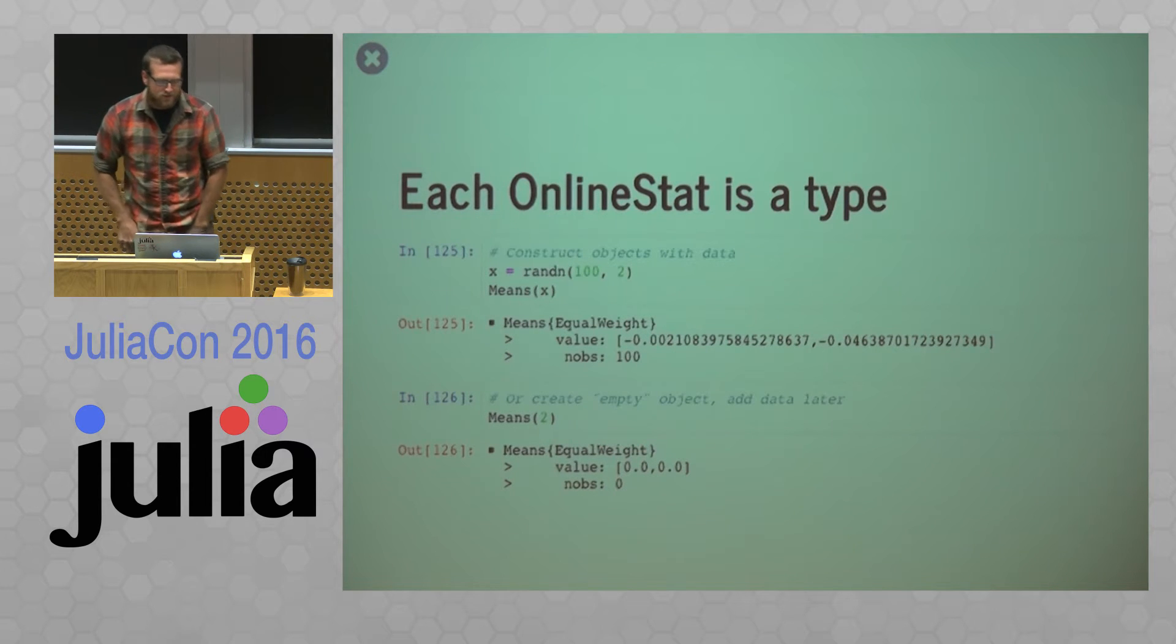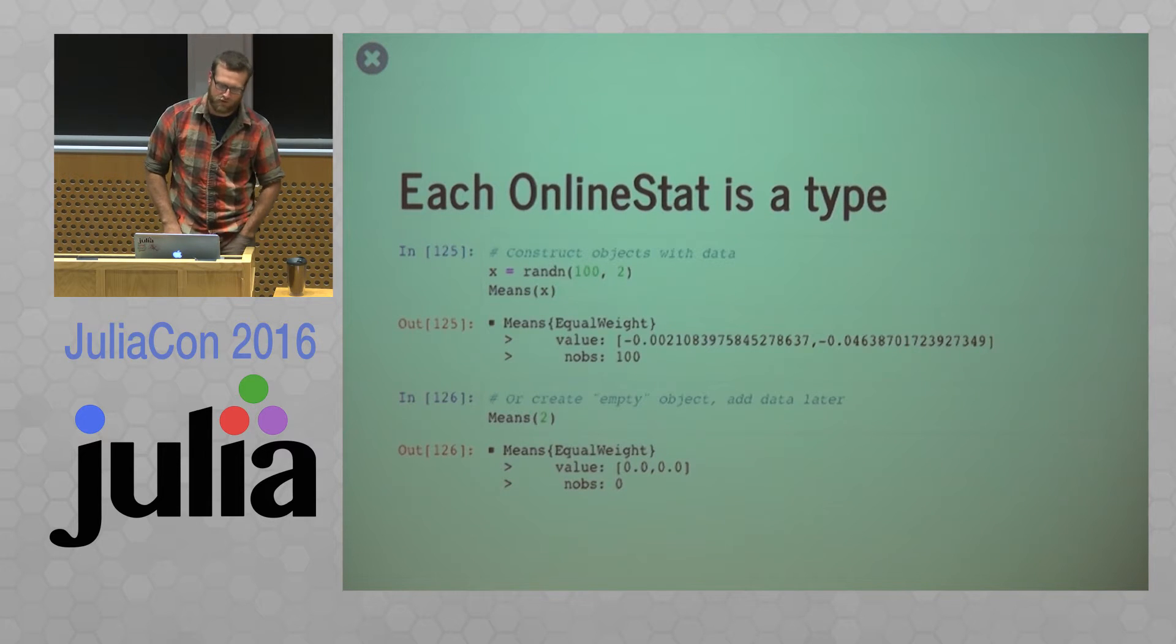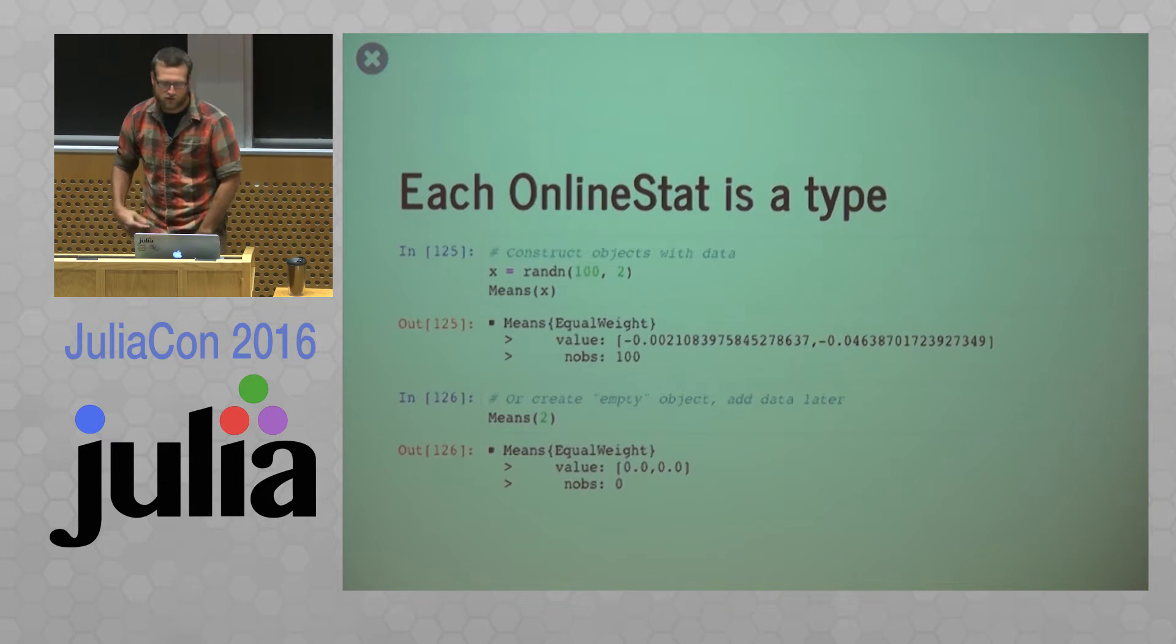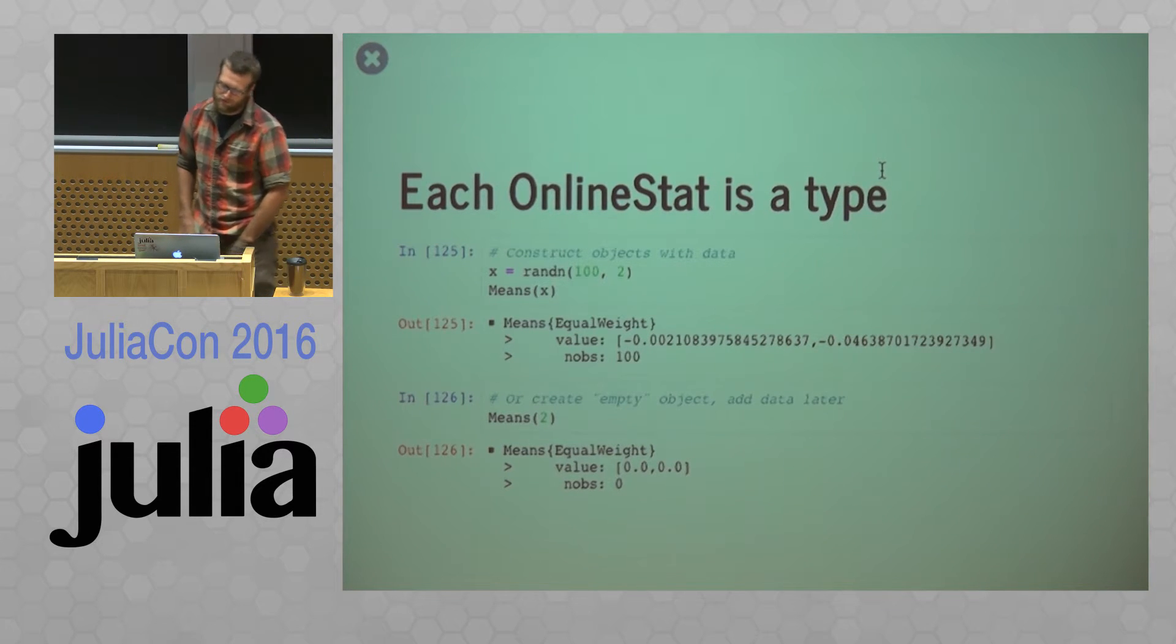So the basics of online stats. So everything is an online stat which is the abstract type and all these things are types. So here every type has two constructors. So you can construct objects with data and by convention data is accepted with observations in rows. So if I give this means object matrix 100 by 2 matrix X it knows that I want two means of 100 observations and not the other way around. Or I can also create an empty object and add data later. So there I'm telling it I want to calculate two different means from two different series.